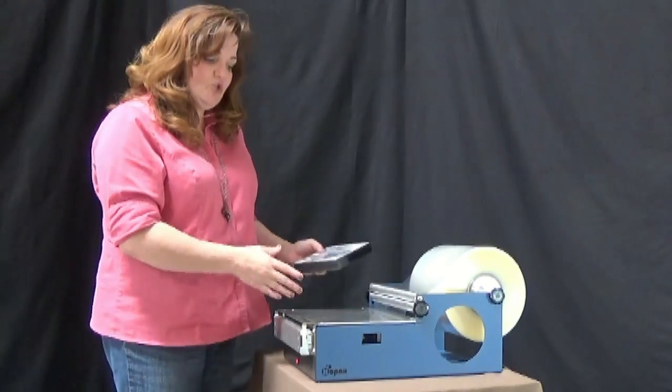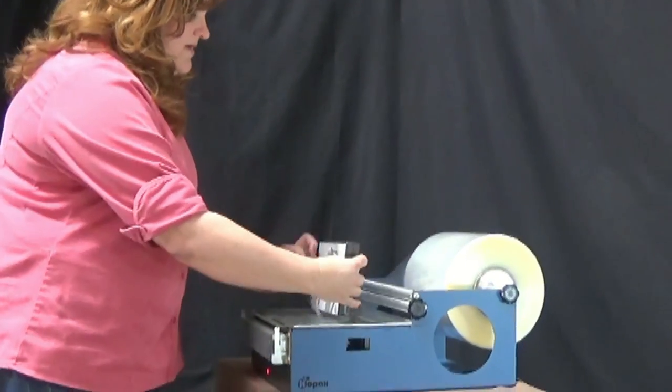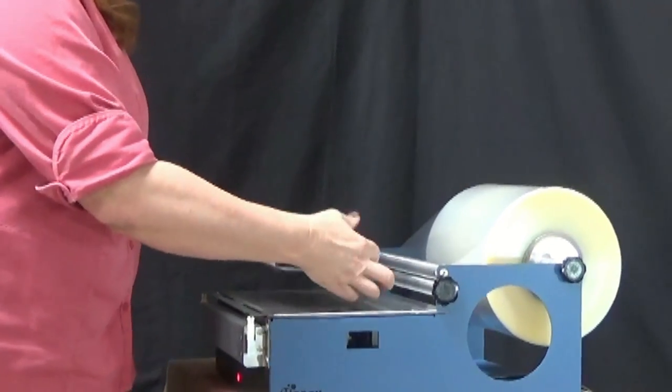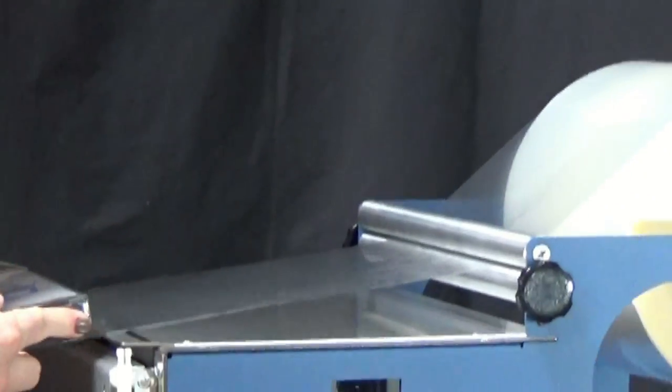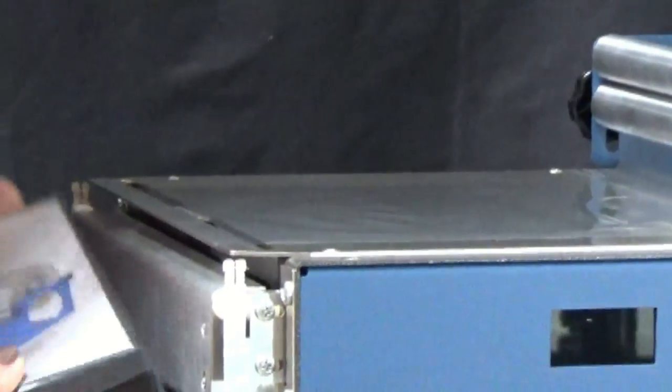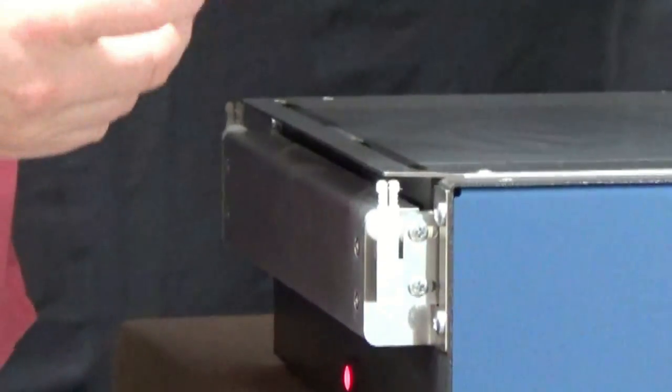I want to show you real quick how the machine works. This is an 8-disc DVD box that I'm using. You simply wrap the film around your item. It folds over. As you bring it across the wire, it seals, and it cuts the film.